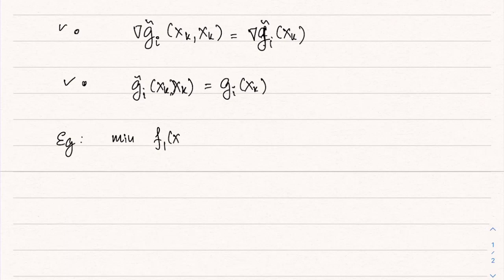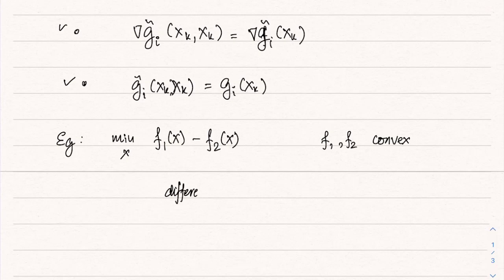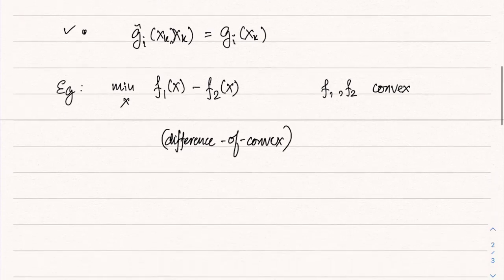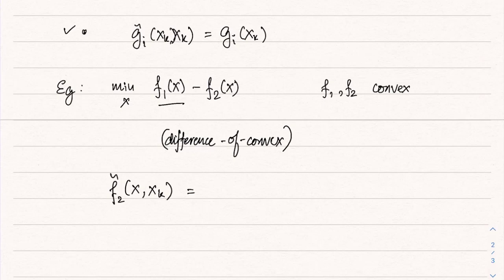Let's look at a specific example: minimizing f_1(x) − f_2(x) over x (unconstrained), where f_1 and f_2 are both convex. This is called a difference of convex (DC) functions problem. We can leave the f_1 part as-is since it is already convex, and for f_2 we construct a convex approximation at x_k.